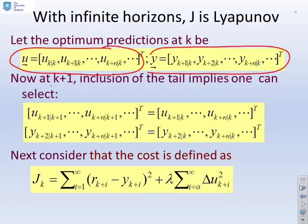Now, if at k plus 1, we assume that we're going to choose the tail, then what we're going to get is u_{k+1} at k+1 is the same as u_{k+1} at k, u_{k+n} at k+1 is the same as u_{k+n} at k.